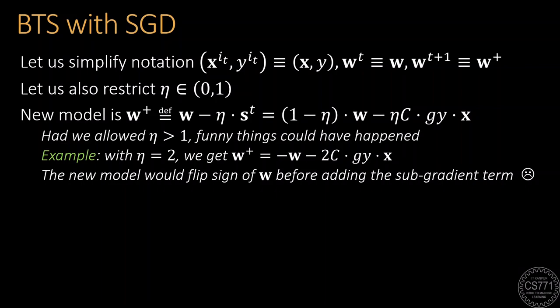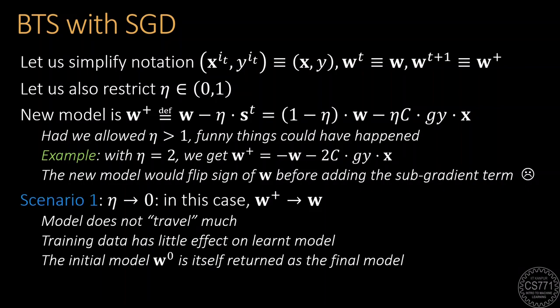Let us analyze what SGD does if we set a very low or very high value of eta. In this case, if eta is set to a vanishingly small value, it is easy to see that the model will not move at all and the initial model will pretty much be the final model returned by the SGD algorithm.